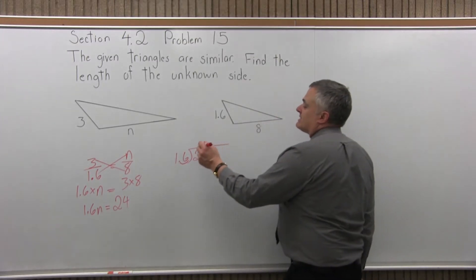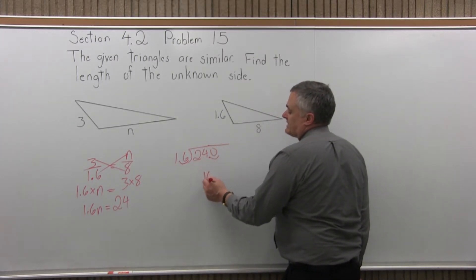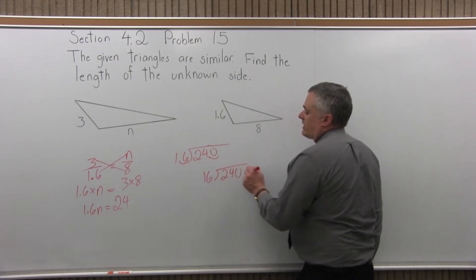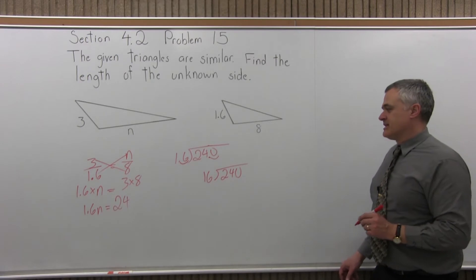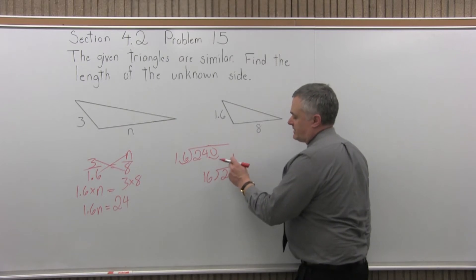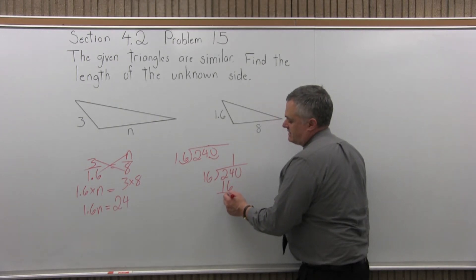So 1.6 divided into 24 is the same as 16 divided into 240. You can look at it this way and not really worry about the decimal. So 16 divides into 2 it doesn't fit. 16 divides into 24 it will fit once. 1 times 16 is 16. Subtract 24 minus 16 is 8.